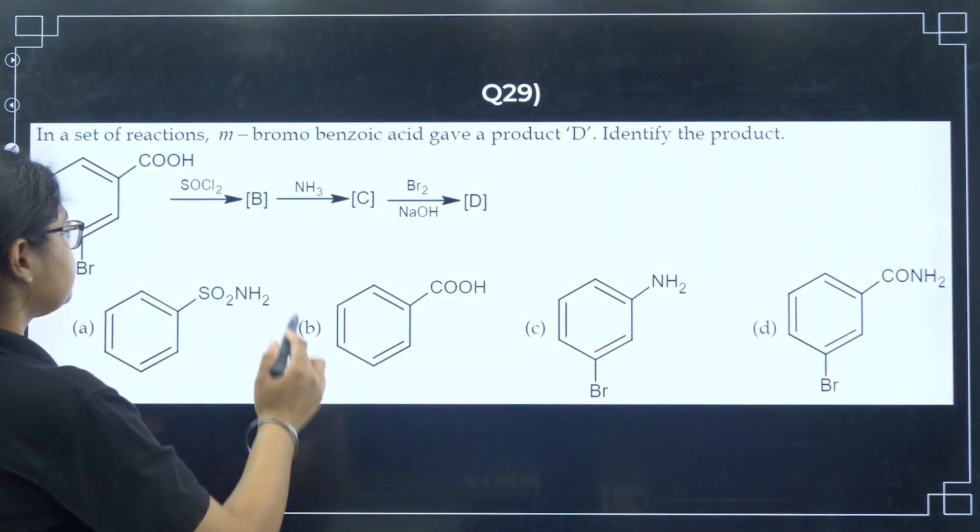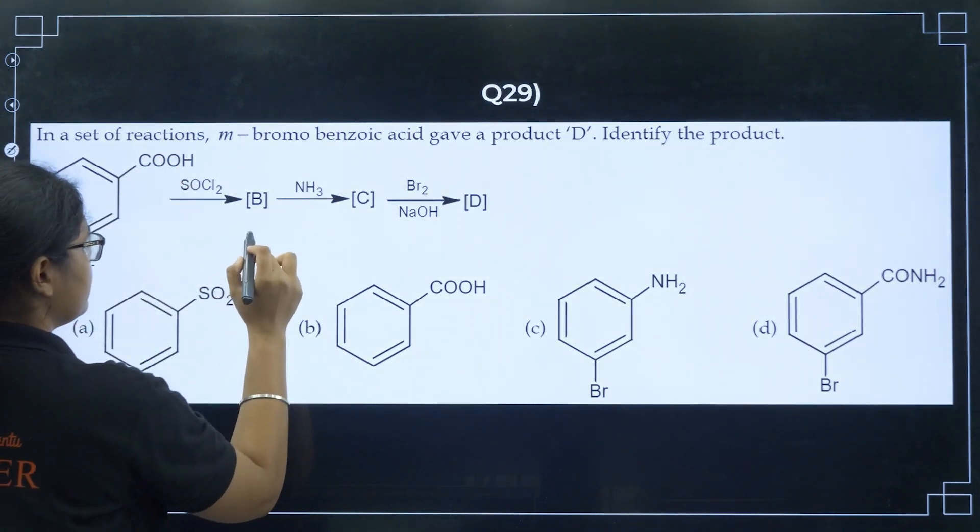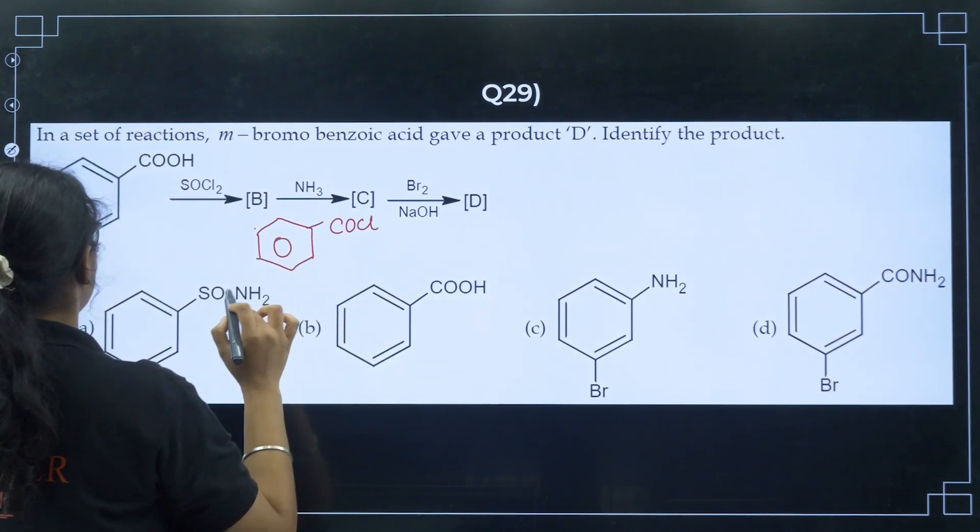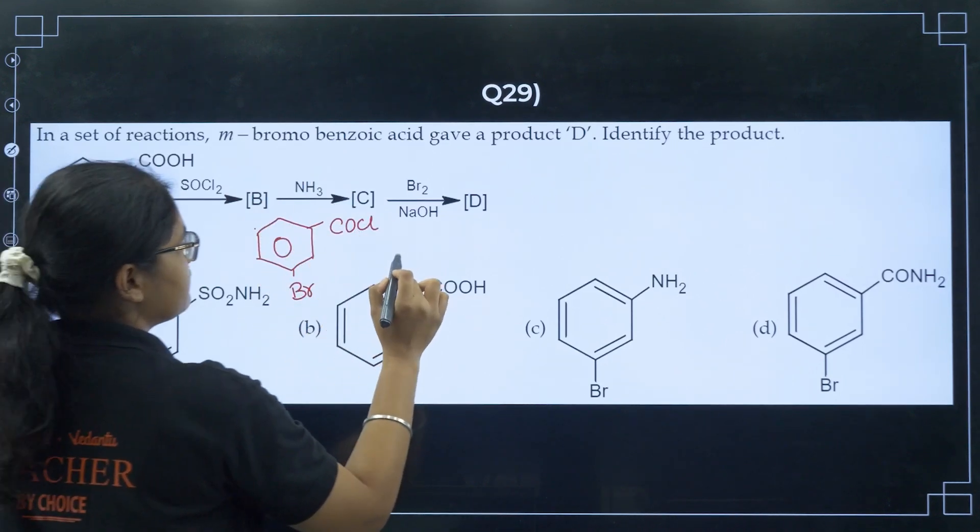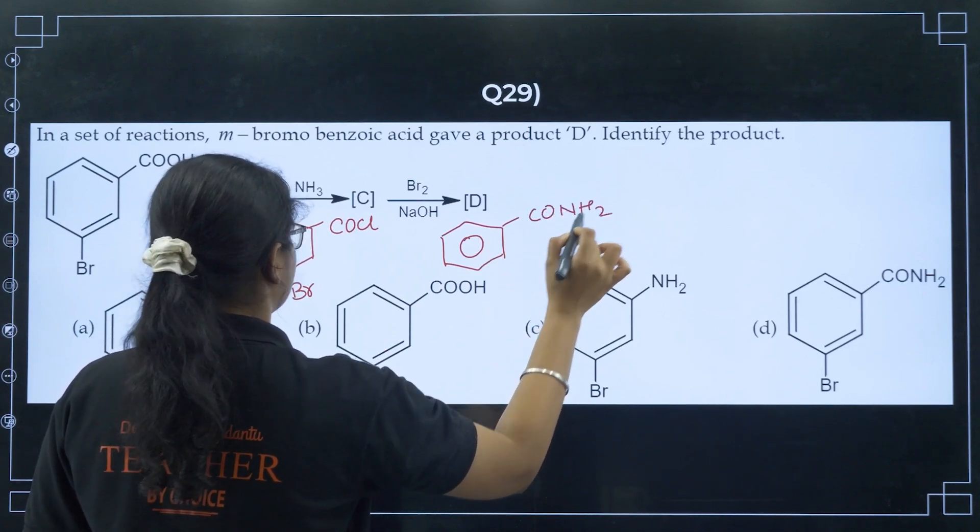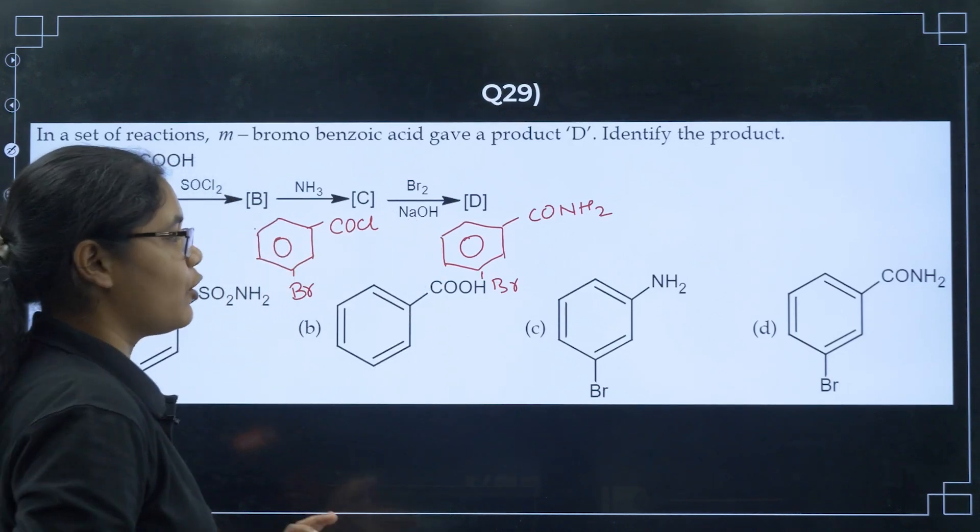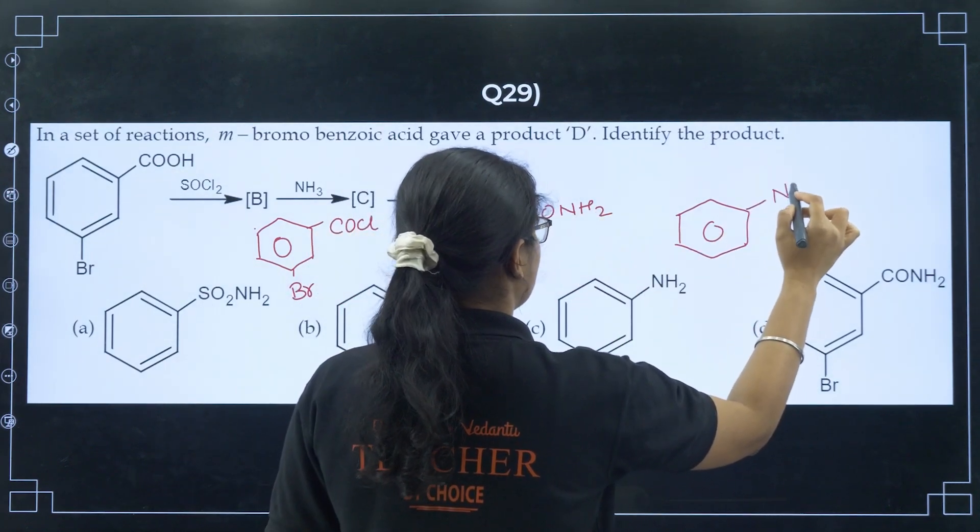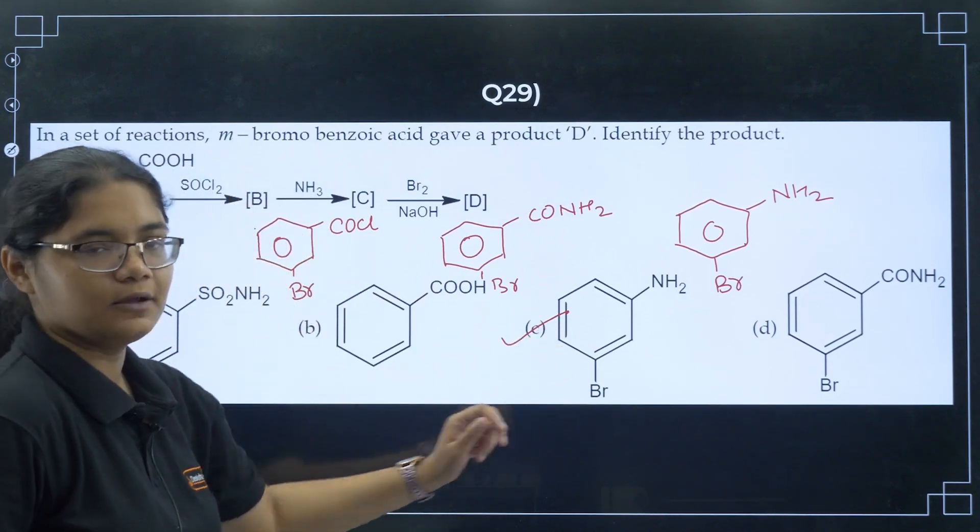Next, coming to this question, you have SOCl2. SOCl2 will replace this OH with the Cl group. So I will get here COCl and Br. After that, if you have NH3, this chlorine will be replaced. So I have CO-NH2 and Br here. Now if you have Br2 and NaOH, that is Hoffmann bromamide degradation, so that will convert this CO-NH2 group, will be replaced with NH2 group and Br group. Option C here, NH2 and Br.